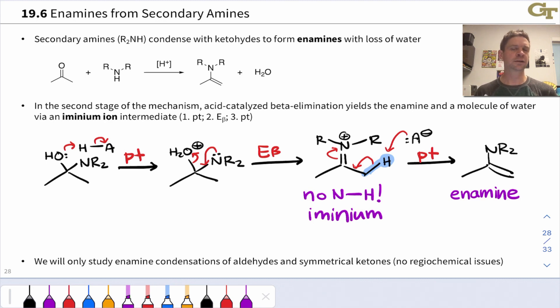We're actually not going to concern ourselves with that in this course. We will only study enamine condensations of aldehydes, in which case there's only one alpha carbon, only one place to remove an alpha proton, and symmetrical ketones where both alpha carbons are equivalent, so there are no regiochemical issues. We'll never need to decide between two isomeric, constitutionally isomeric enamine products.